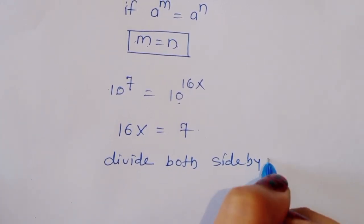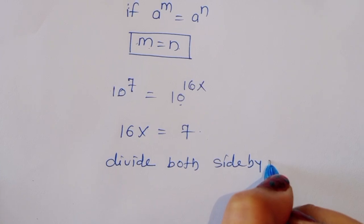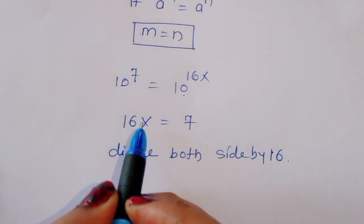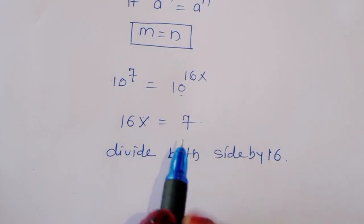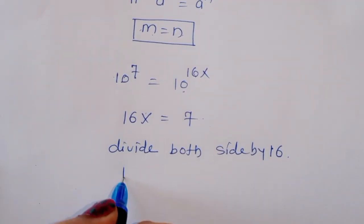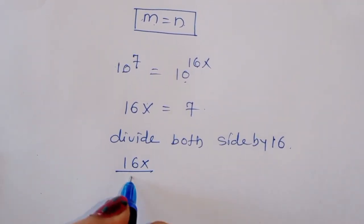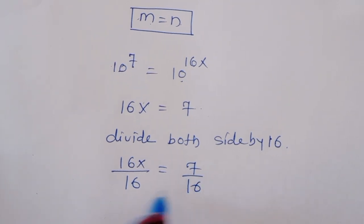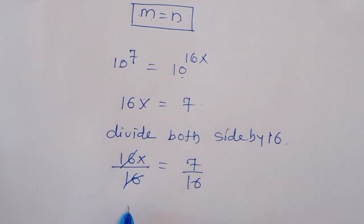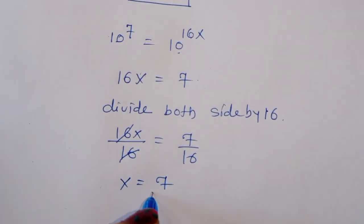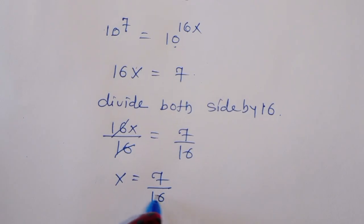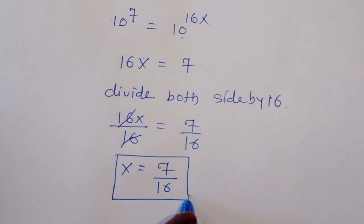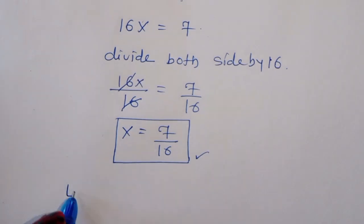Now we know the formula: if a power m equals a power n, then m equals n. Dividing both sides by 16, we get x is equal to 7 upon 16. This is the value of x. Now let's verify.